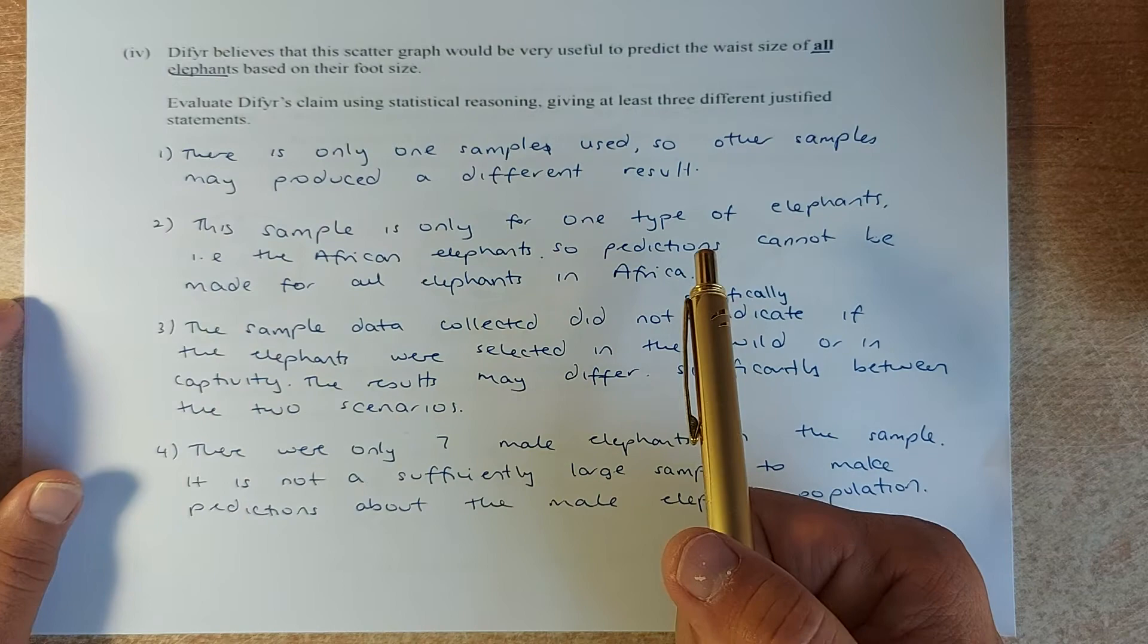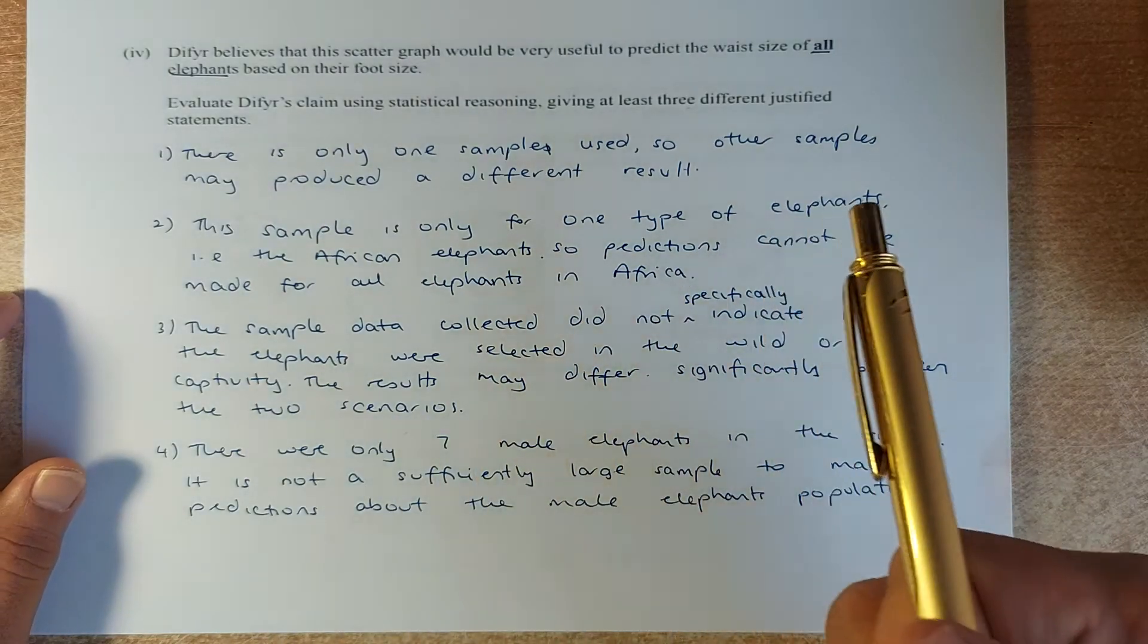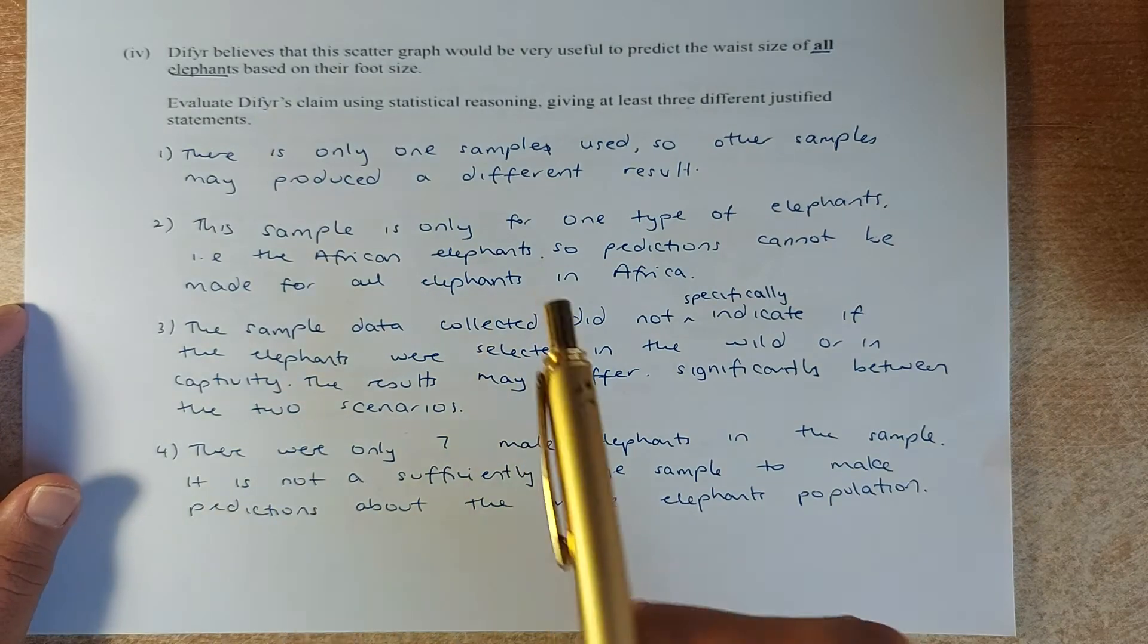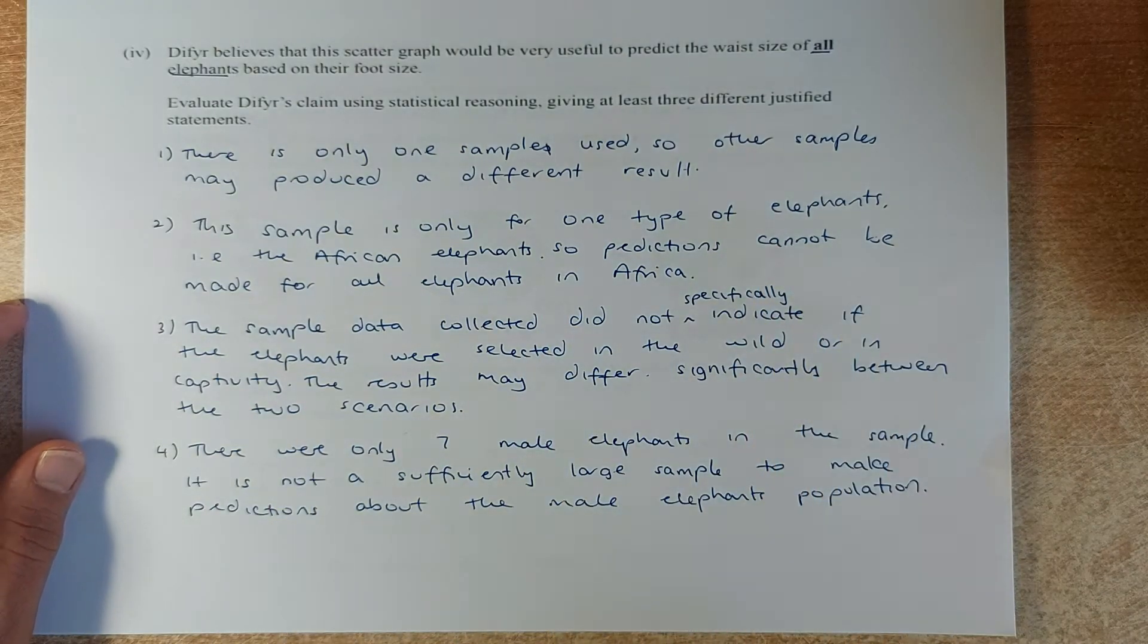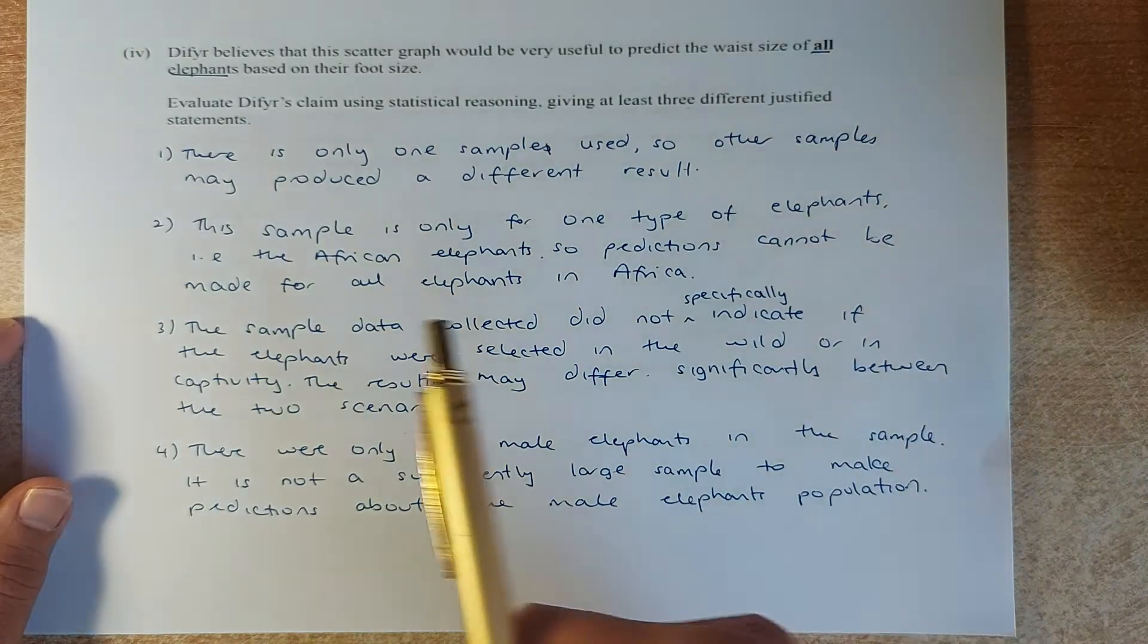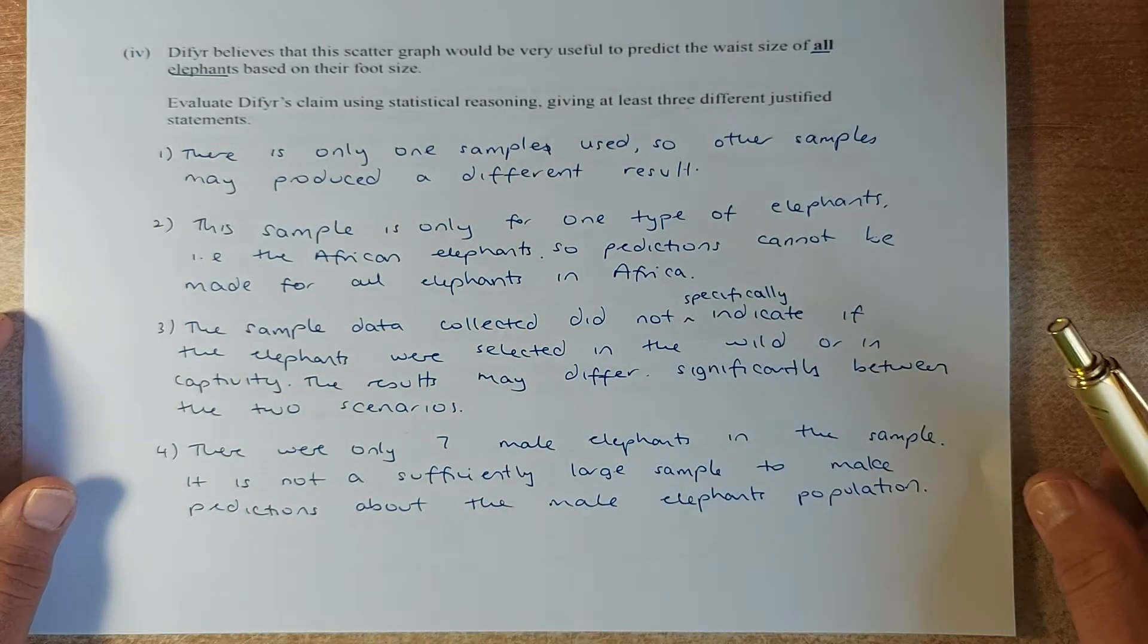There is only one sample used, so other samples may give you a different result. So this is called chance variation, so sample variation. So if you do different sampling method, you will get a different result. So that's why this is not very good.